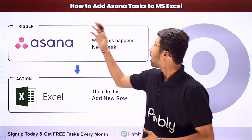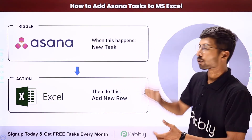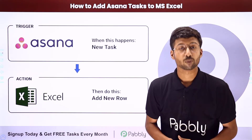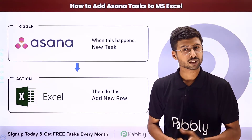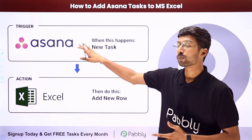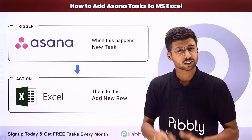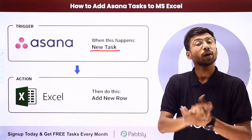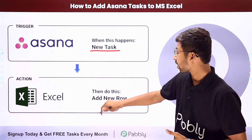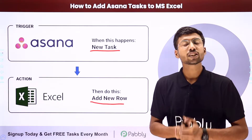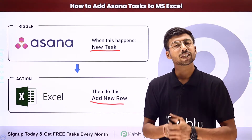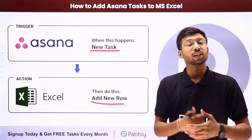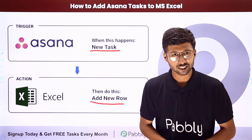In this video, we will discuss how to add Asana tasks to Microsoft Excel. Adding or maintaining the task record is very important, and you can automate this process. Suppose you are using Asana as a project or task management application and you want that whenever a new task is created in Asana, you want to add the details of the same task in Microsoft Excel as well, in a new row. The trigger of this automation will be new task in Asana, and the action will be addition of that data into Microsoft Excel as a new row.